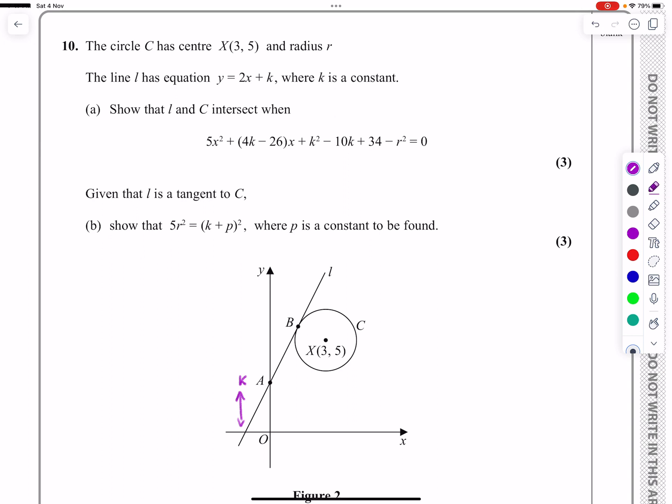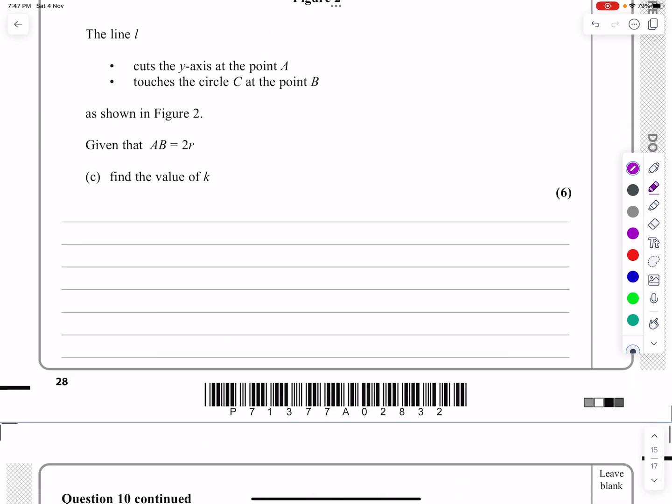What does part A say? Part A says show that L and C intersect when... And then we've got this complicated equation here. Well, how do I find out where two lines intersect? Let's get started with this. So first of all, equation of a circle: (x - a)² + (y - b)² = r². That's the equation of a circle if I've got a center (a, b) and radius r.